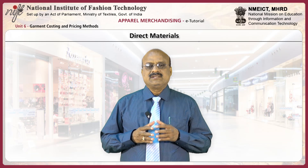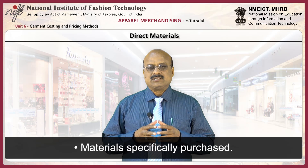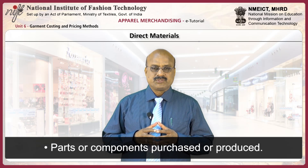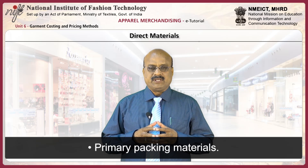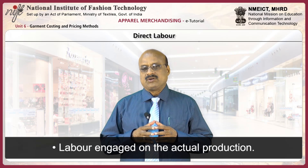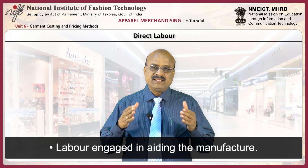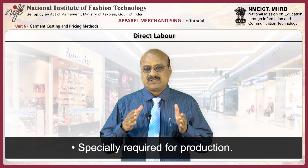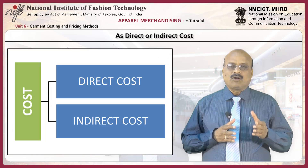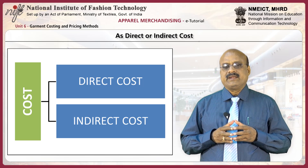Direct materials include all raw materials, materials specifically purchased, parts or components purchased or produced, and primary packing materials. Direct labour includes labour engaged on the actual production, labour engaged in aiding the manufacturing, specially required for production — for example, quality inspectors. Costs can be classified as direct costs and indirect costs.